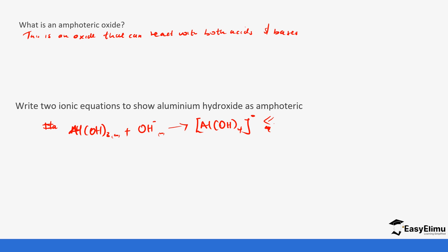That's it for today on bases and different types of oxides and hydroxides. For our next lesson, we will be focusing on qualitative analysis — looking at how we test in the lab to identify unknown compounds using both sodium hydroxide and ammonia. You'll notice how unique these metals are when they react with sodium hydroxide and ammonia. See you in the next lesson.